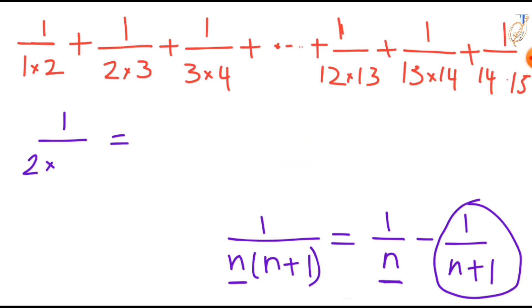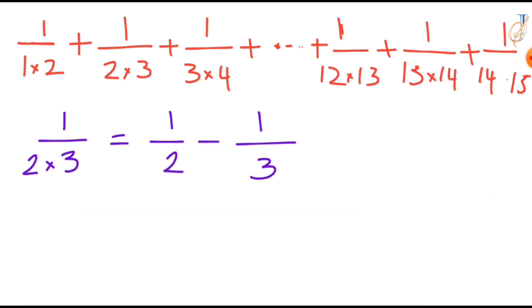Similarly, 1 over 2 times 3. Now here you are taking n equal to 2, so write in terms of this formula, then 1 over n means 1 over 2 minus 1 over n plus 1 means 1 over 2 plus 1 that is 3. So 1 over 2 times 3 we can write it as 1 over 2 minus 1 over 3. Now 1 over 3 times 4 we can write it as 1 over 3 minus 1 over 3 plus 1 that is 4.